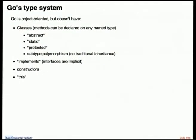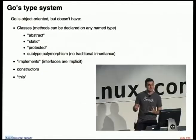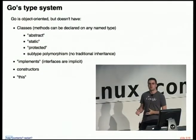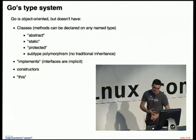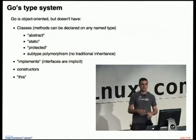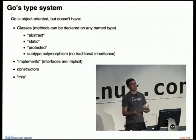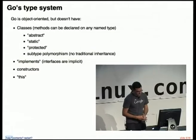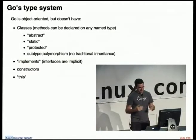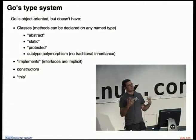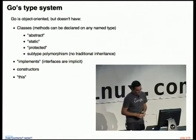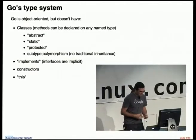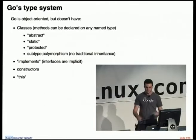Go is an object-oriented programming language, but it doesn't have the familiar notion of classes and all the baggage that comes with those. So it doesn't have abstract classes, static methods or variables, the concept of protected or subtype polymorphism as a design philosophy. It doesn't have 'implements' in terms of explicitly implementing interfaces. It doesn't have constructors on objects. And it doesn't have a concept of 'this'.